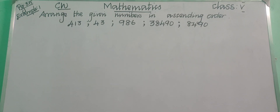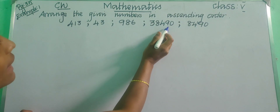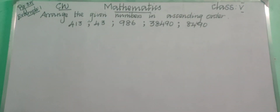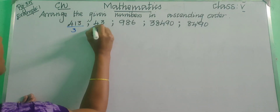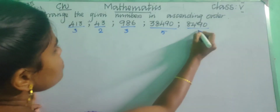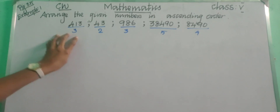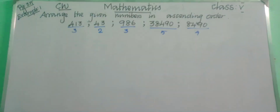The numbers given are 413, 43, 986, 38,490 and 8,490. How will you arrange this in ascending order? Ascending order means smallest to greatest. First count the digits: 413 is a 3-digit number, 43 is a 2-digit number, 986 is a 3-digit number, 38,490 is a 5-digit number, and 8,490 is a 4-digit number.